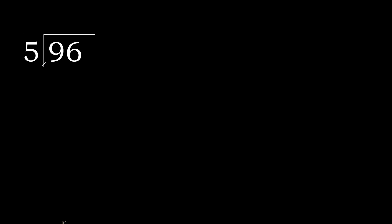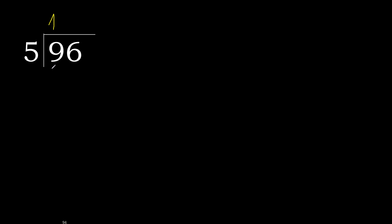96 divided by 5. 9 is not less, therefore work with 9. 5 multiplied by which number is nearest to 9 but not greater? 5 multiplied by 2 is 10 — 10 is greater. 5 multiplied by 1 is 5 — 5 is not greater. 9 minus 5 is 4.